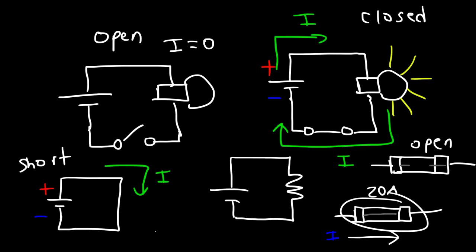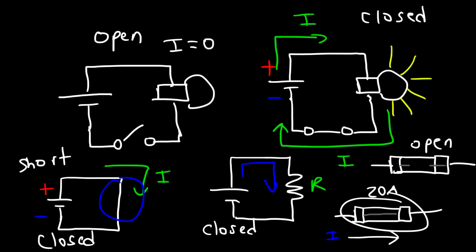Now the last circuit is also a closed circuit. A short circuit is also a closed circuit because current does flow and there are no breaks in the circuit. This circuit is not a short circuit because we do have a resistor, and the resistor will limit the amount of current flowing through the circuit. Any type of device like a motor, a speaker, or a light bulb all have an internal resistance, so they limit the amount of current that flows. But if you just have a wire, which has very little resistance, it's going to allow a large amount of current to flow through it, which can be dangerous.